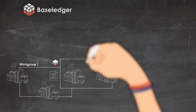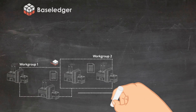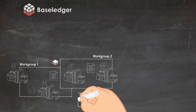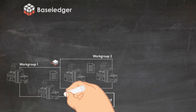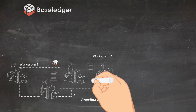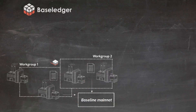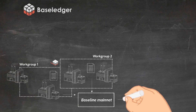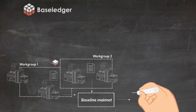Baseline synchronizes the different work steps of such business processes via a common frame of reference — a public blockchain, the mainnet. Some business processes may result in objects that have the potential to be tokenized on a blockchain, for example an invoice.